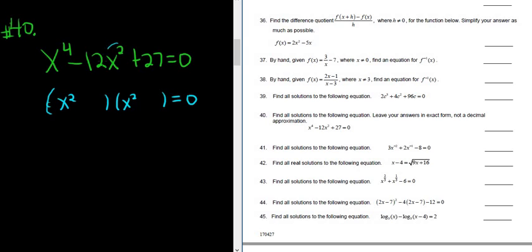Usually when you have three terms, whatever is here in the middle goes here and here. Not always, but it's really easy to check. x squared times x squared is x to the 4th, right? It doesn't always work, but it usually does.